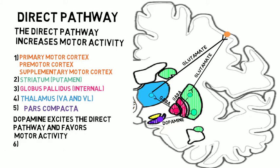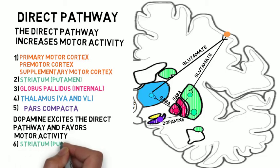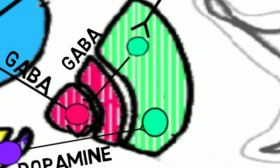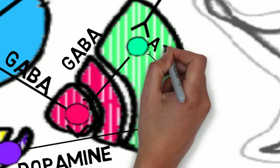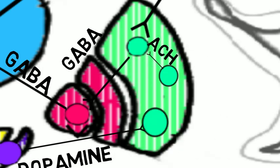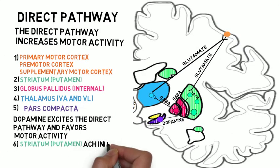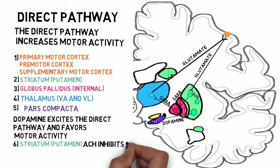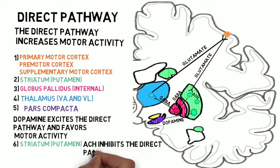The striatum also contains acetylcholine-secreting interneurons, which synapse on GABAergic neurons. This ultimately excites striatal cells, which inhibits the direct pathway and reduces motor activity.